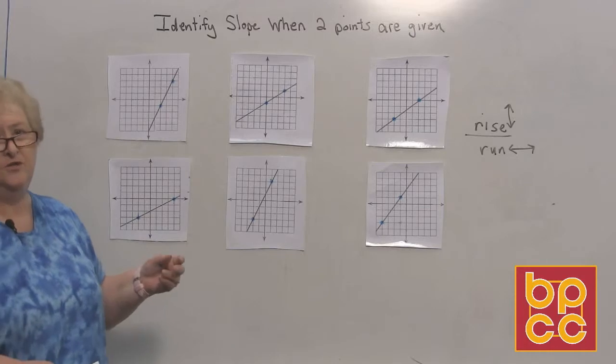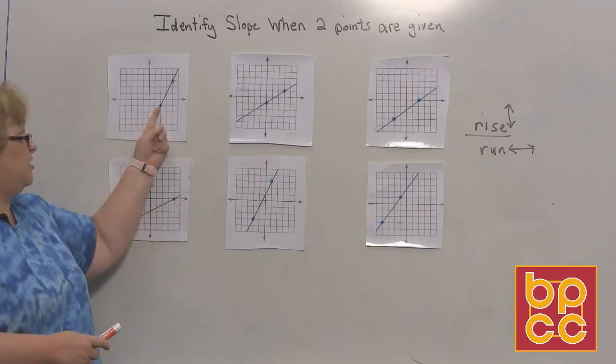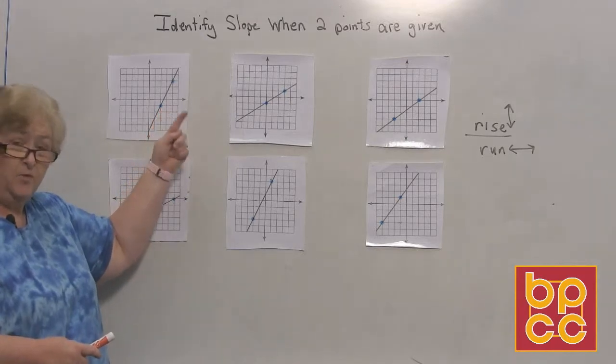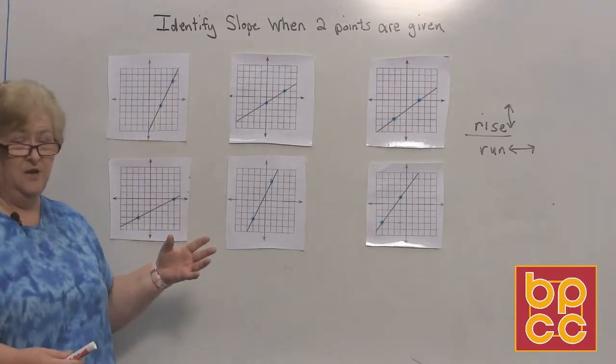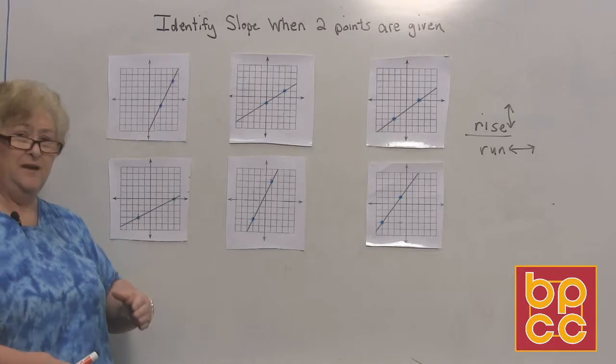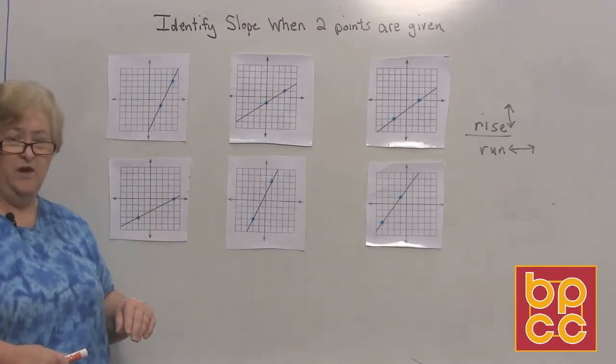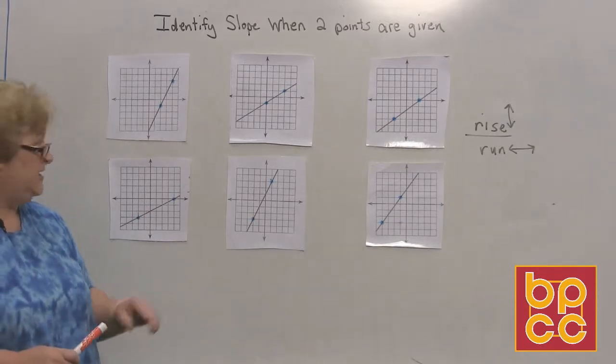A common mistake that students make is that they will start on a particular dot and they'll go left or right. They'll put that number on top which is in fact the run and not the rise. So let's make sure that we get in a habit of going north or south first, then we'll go east and west and get the run.